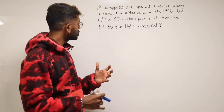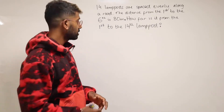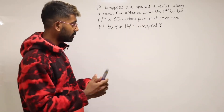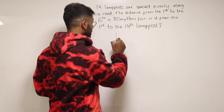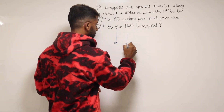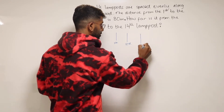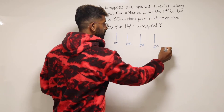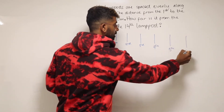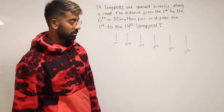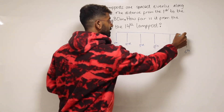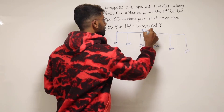With this kind of question you probably want to draw as much as you can so you can see it presented in front of you. So the distance from the first to the sixth lamppost — let's draw out six lampposts. That's the first one, the second, the third, the fourth, the fifth, and the sixth. We're told the distance from the first to the sixth is 80 metres.